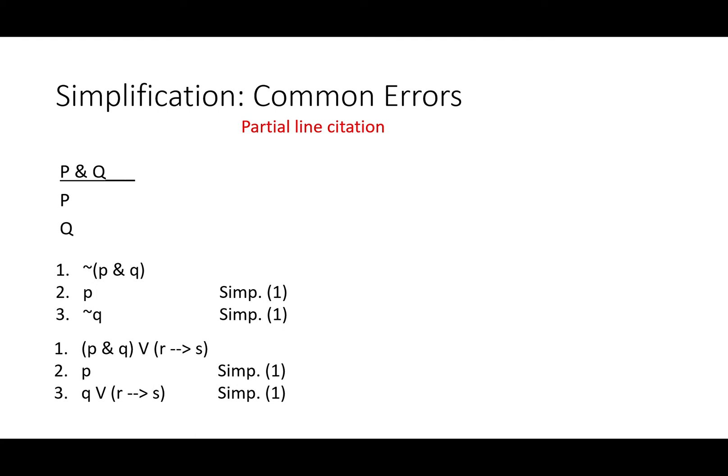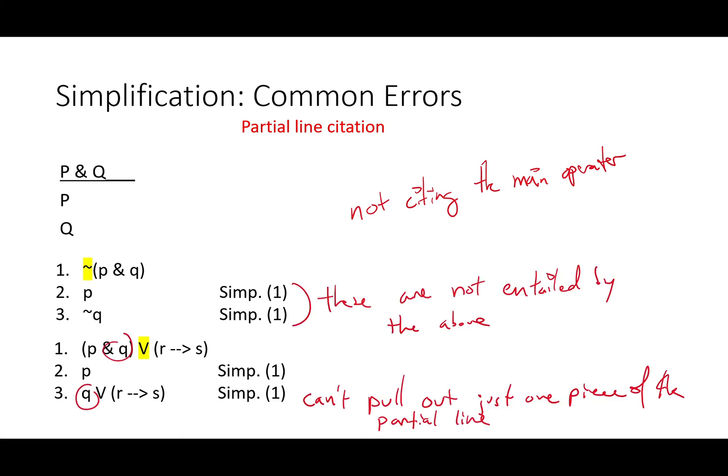You might think that you can get rid of P and get Q or if R then S, but again the main connector is the V, not the ampersand. In our first example, the not is the main connector. You can't use simplification there. In the second, it's the disjunction. No simplification there either. In any case, these answers aren't entailed by line one. You can't pull out just one piece of a partial line.